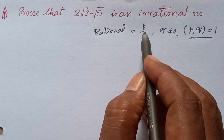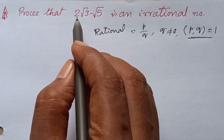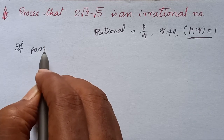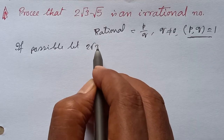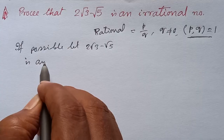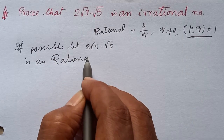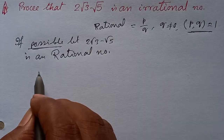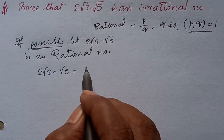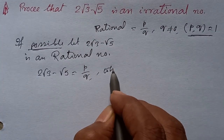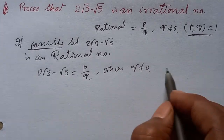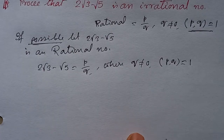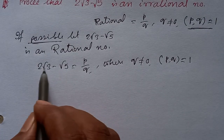So any rational number can be expressed in the form p/q. If possible, let 2√3 - √5 be a rational number. So we can write 2√3 - √5 = p/q, where q ≠ 0 and gcd(p, q) = 1, that is p and q are prime to each other. Now square both sides.